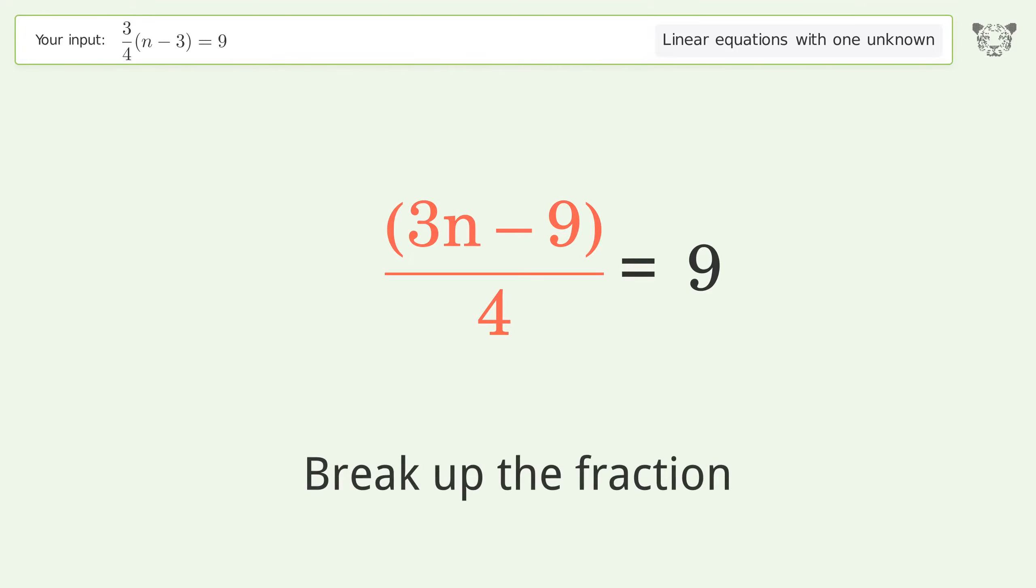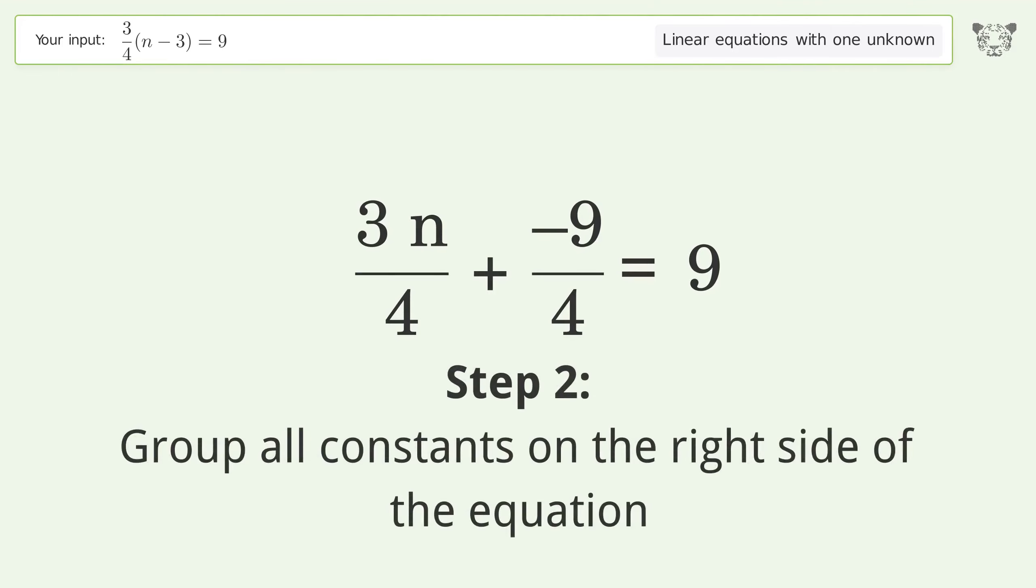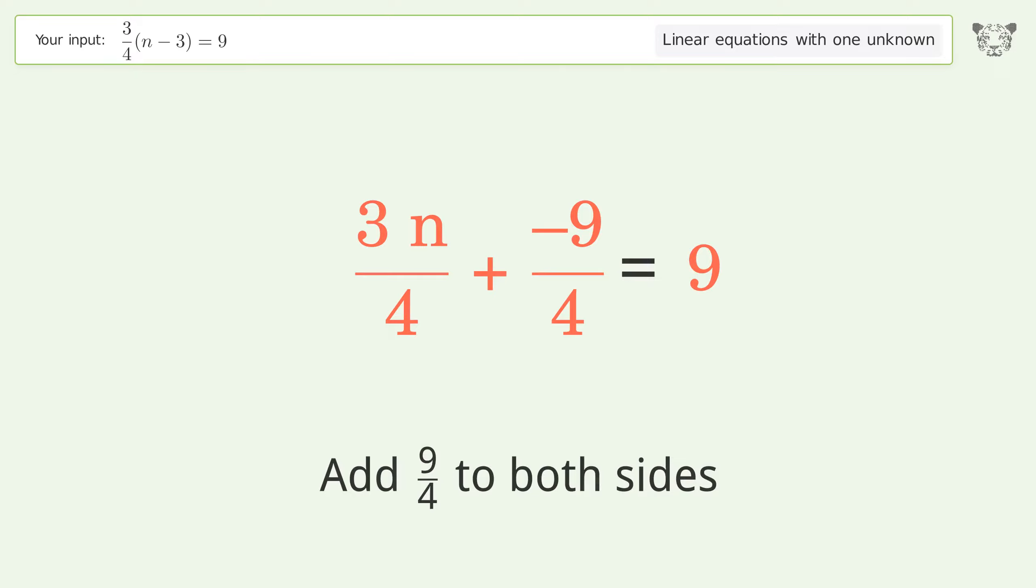Break up the fraction, then group all constants on the right side of the equation. Add 9 over 4 to both sides.